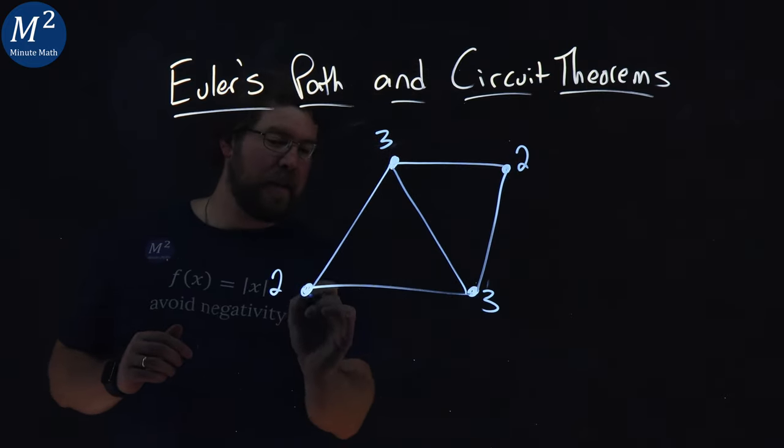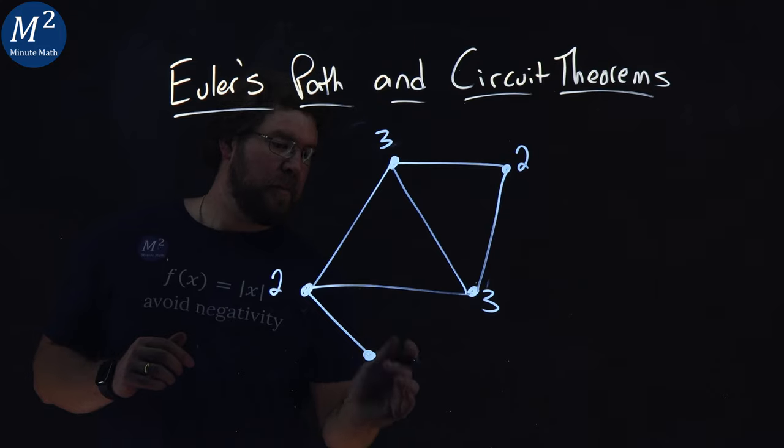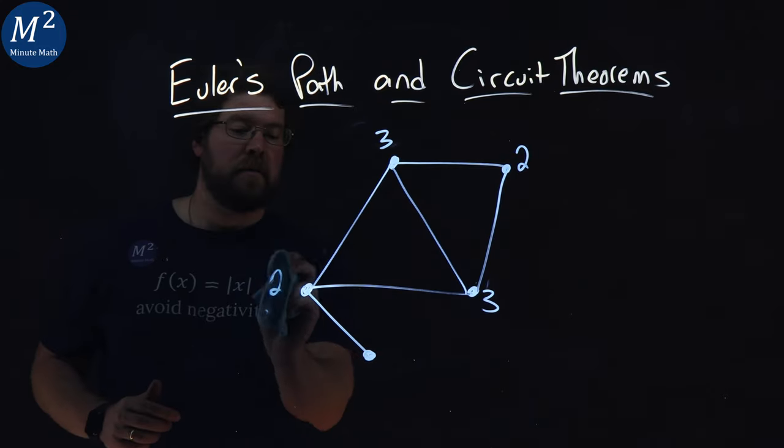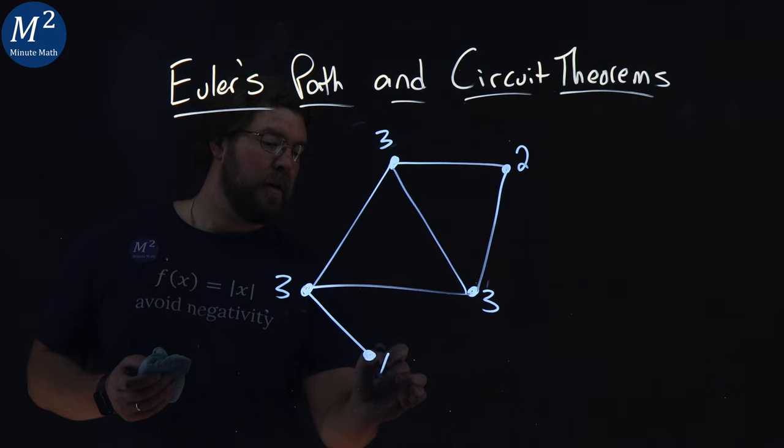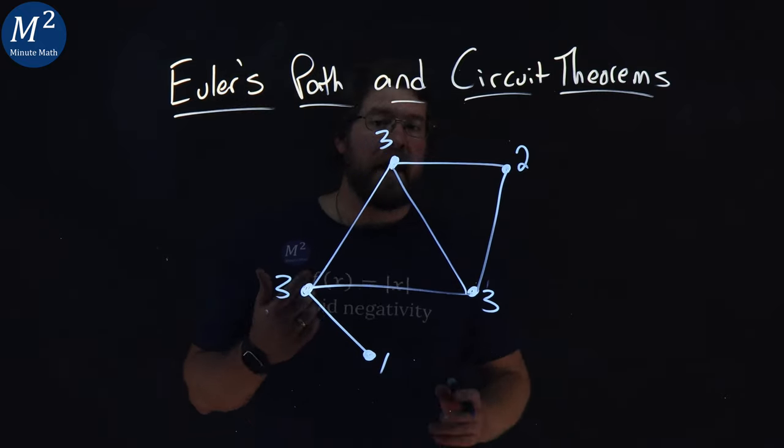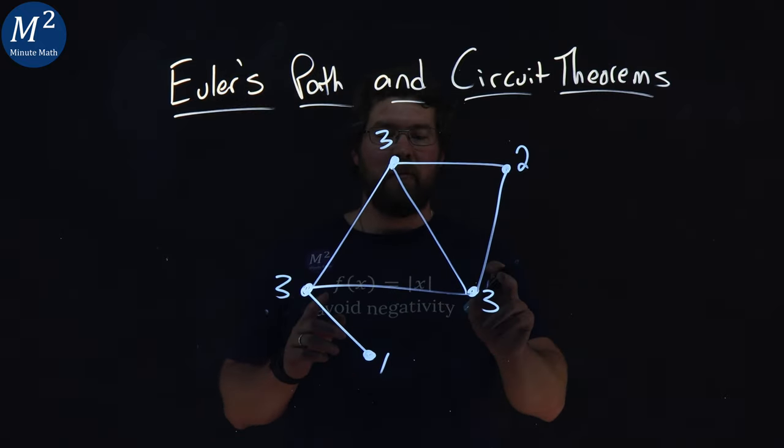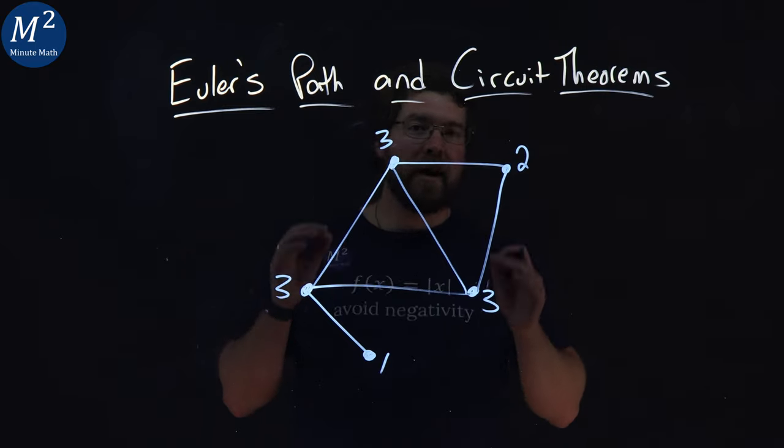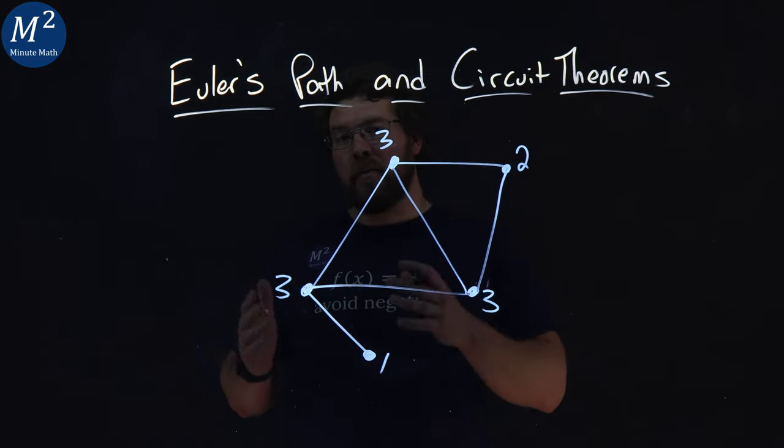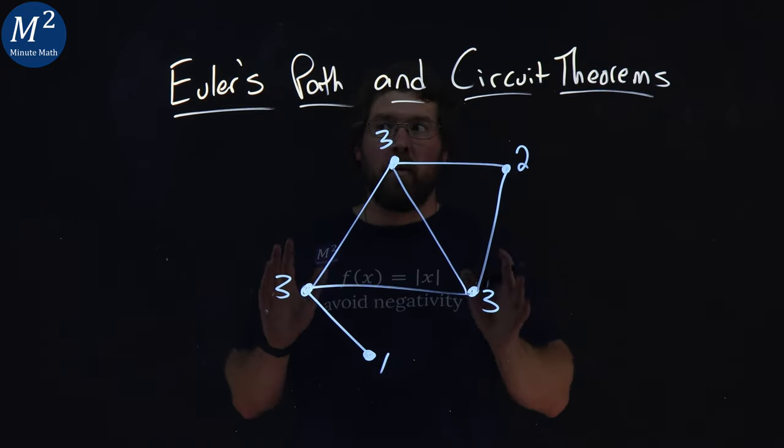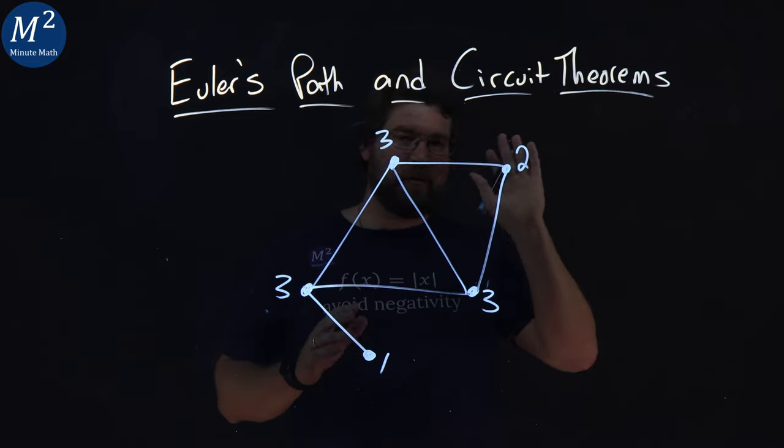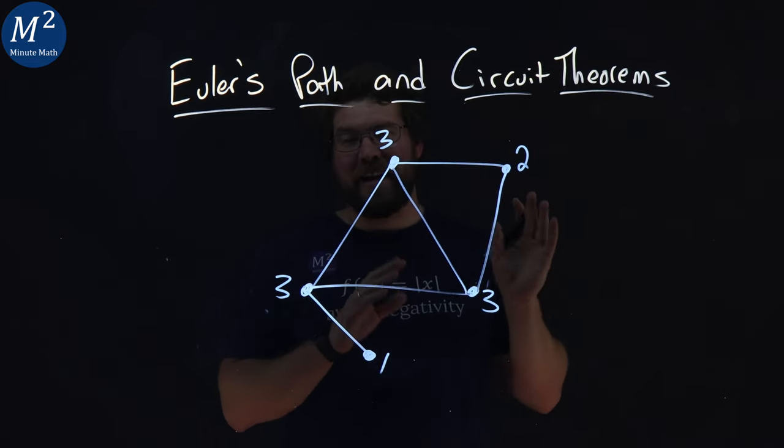Now if I extend this out here to be as such, this graph here, degree 3, here's a 1, and now all of a sudden I have 1, 2, 3, 4 vertices that are odd degree, no longer can create an Euler Path here, and the circuit way out the window can't have a circuit as well.